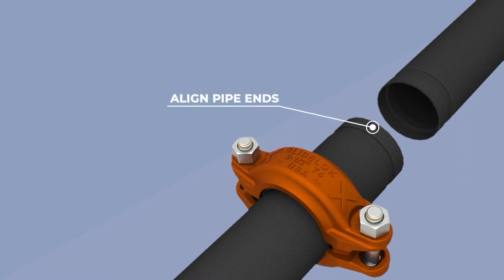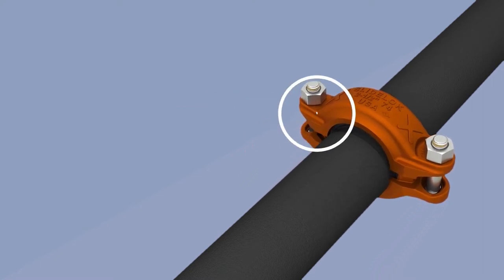Align the two pipe ends and slide the coupling into position, centering it between the grooves on each pipe.